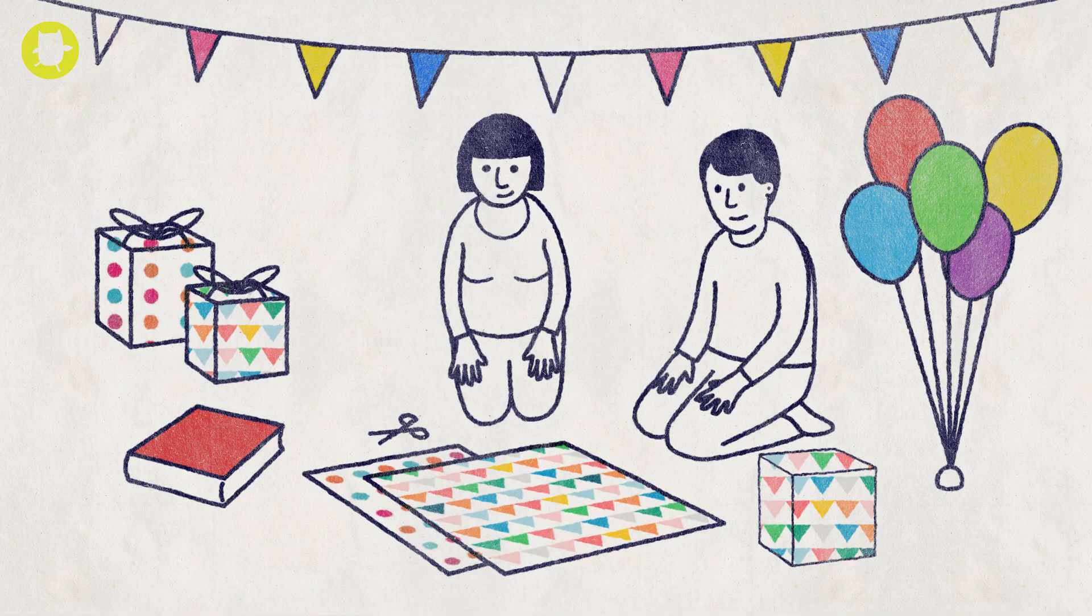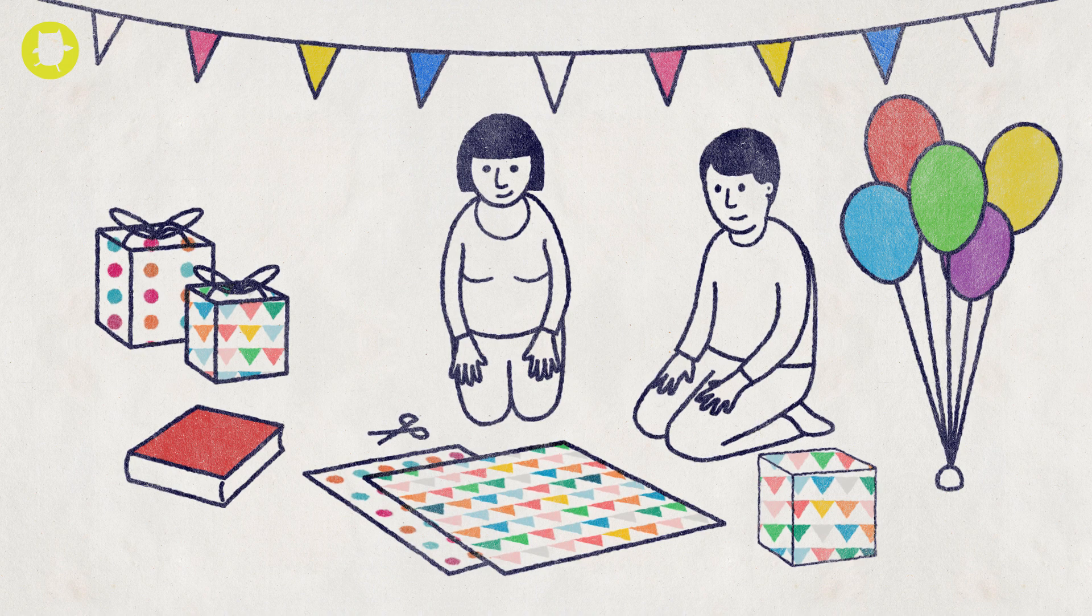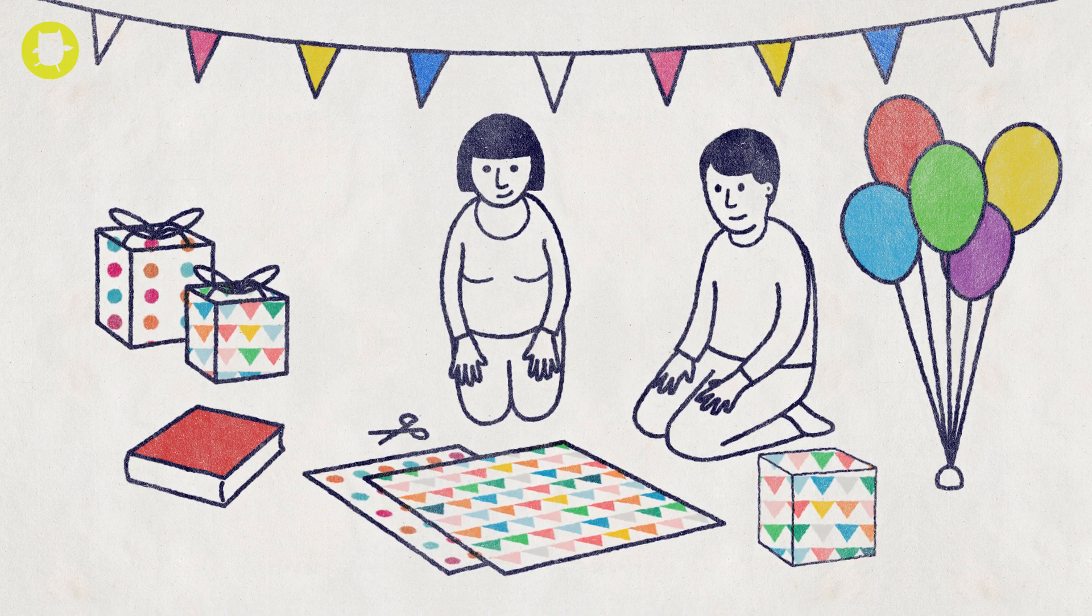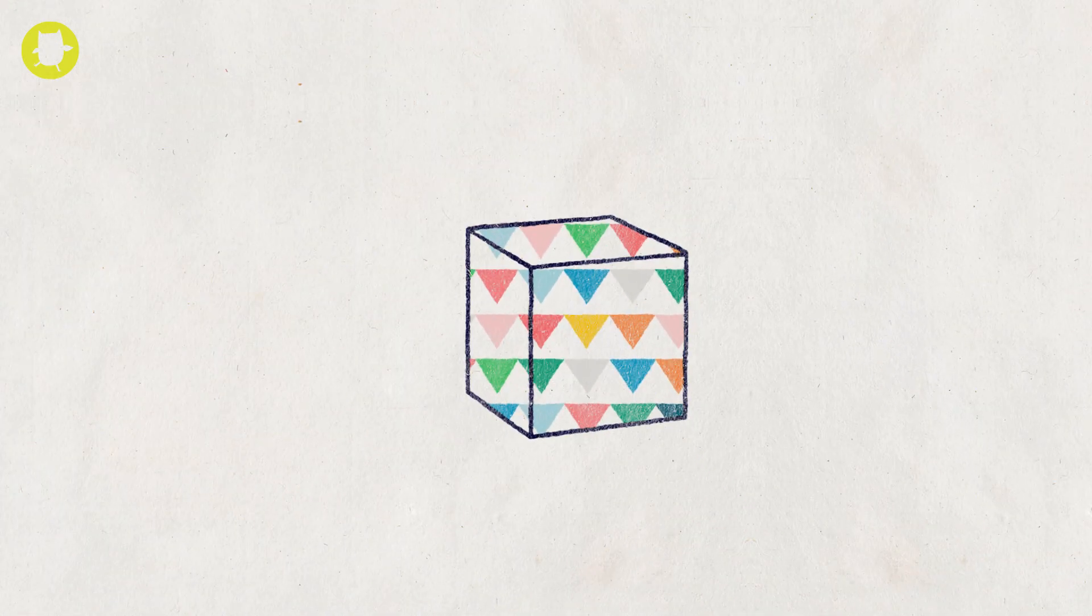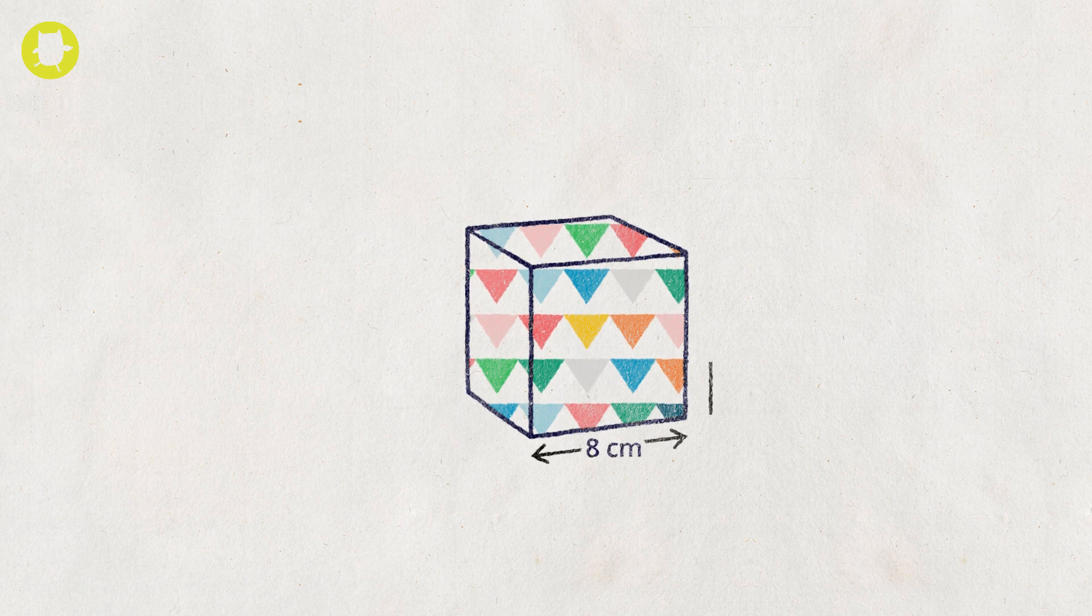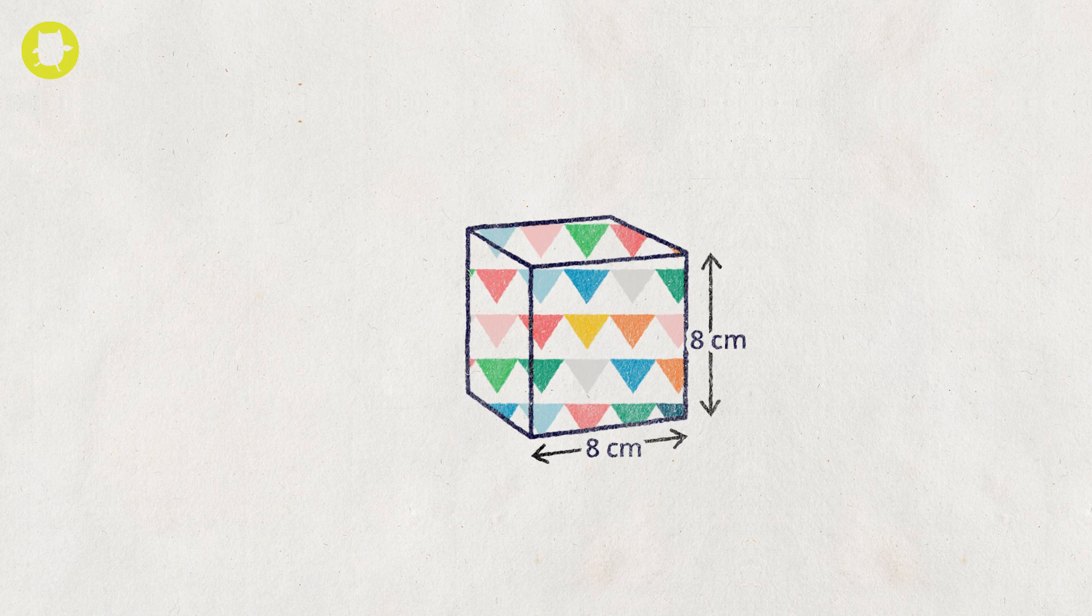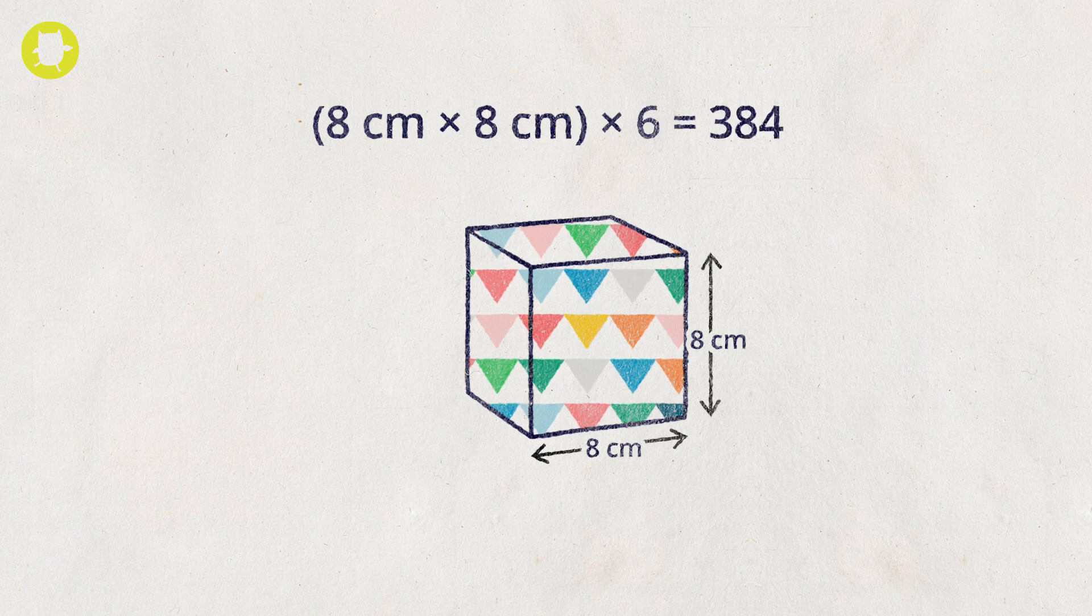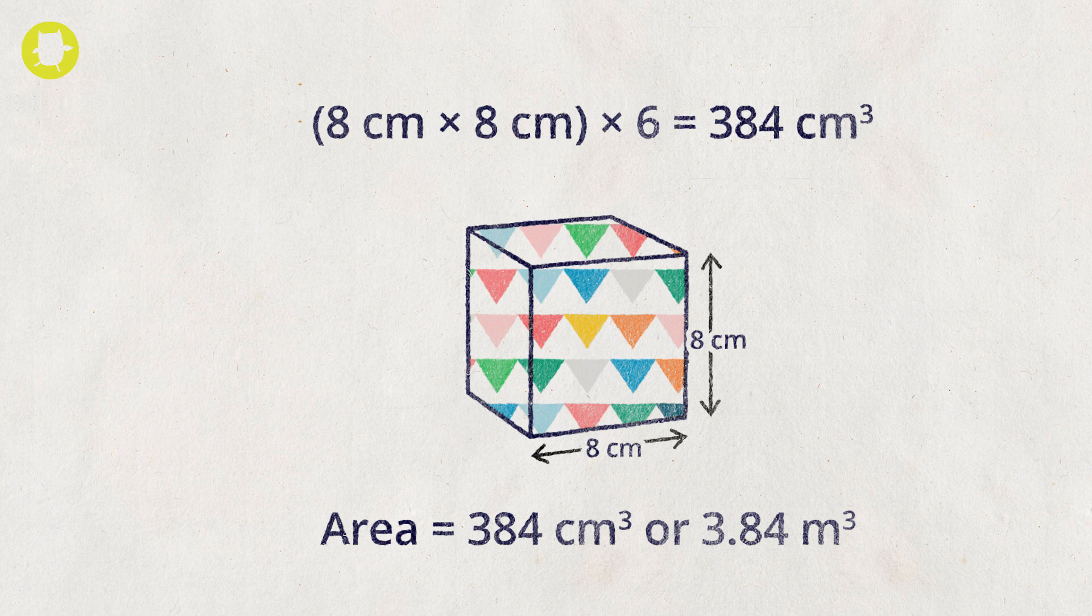To work out the area of a cube, we first need to work out the area of each face. Each face is a square which has sides measuring 8 centimeters. So each square face has an area of 64 centimeters squared. There are six faces, so we multiply 64 by 6 to find the surface area.